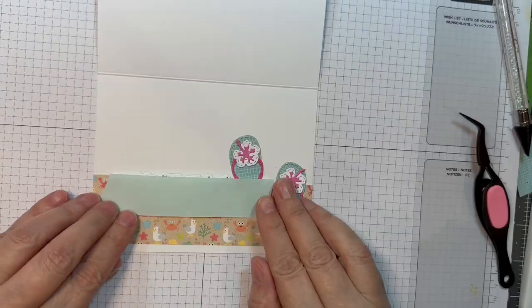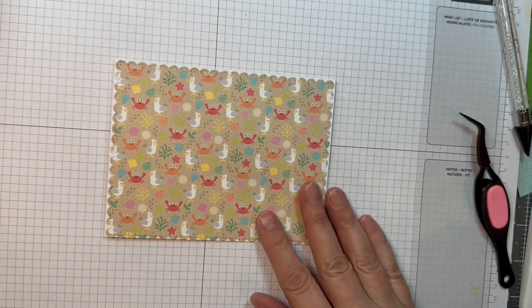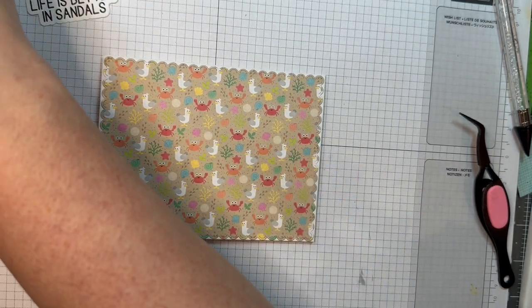I'm just going to use some post-it tape to make sure that VersaFine Clair Nocturne ink doesn't mess up the inside of my card because it takes a while to dry.